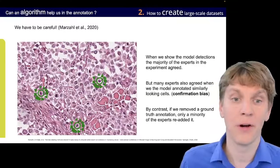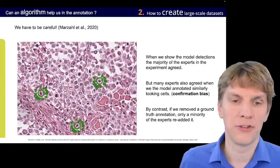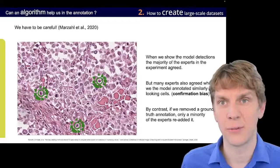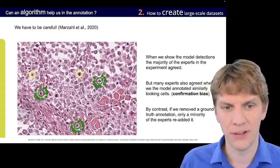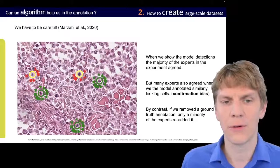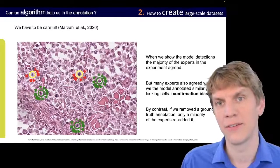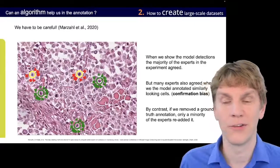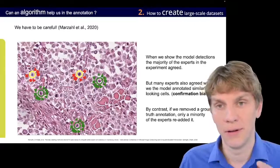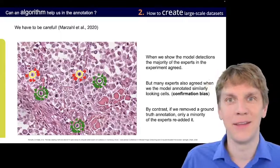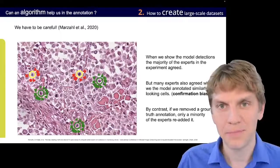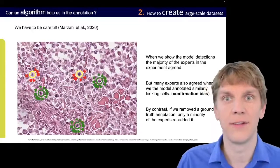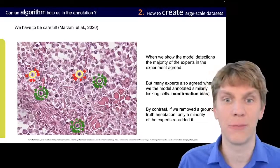However, also, if we chose to add cells that were non-mitotic figures but looked a little bit similar, for example, these ones here, then also lots of our annotators agreed with that. So, we can see that the more closely the objects that we annotate are related to the real object, the stronger we can induce some kind of bias.